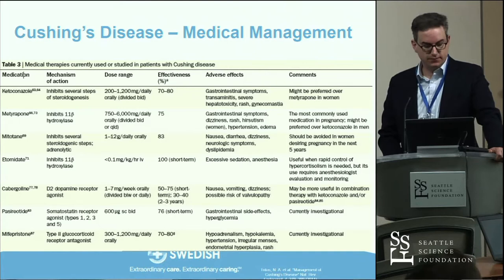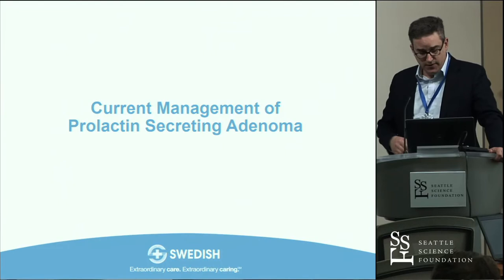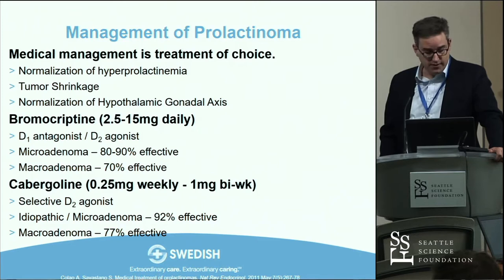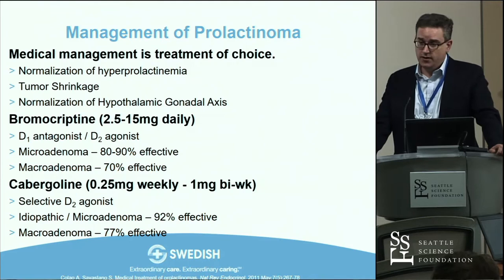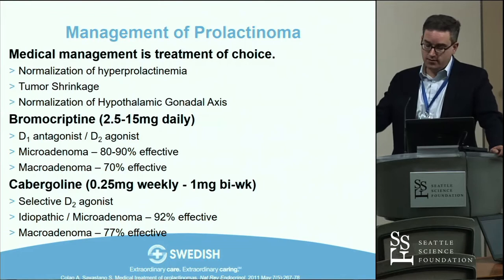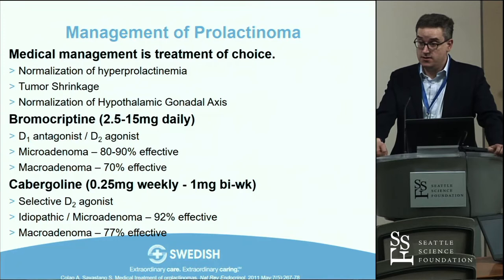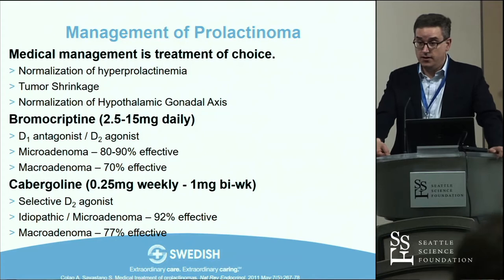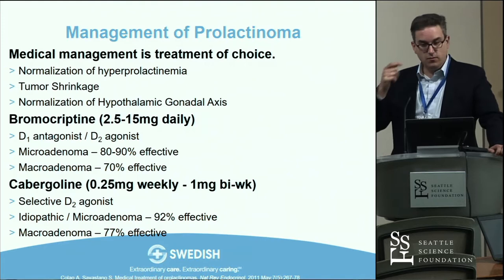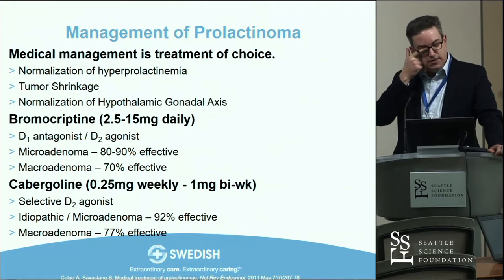For current management of prolactin-secreting adenomas, this is the one situation where medical management is the primary therapy and surgery is reserved for those who fail medical management. The reason: you get normalization of the biochemical abnormality, reduction in tumor burden, normalization of the gonadal axis — restoring normal menstrual cycles, fertility, and testosterone levels in men. The two classic agents are both dopamine agonists: bromocriptine is a mixed D1 antagonist/D2 agonist, and cabergoline is a more selective D2 agonist.